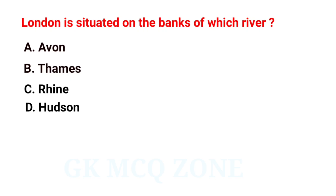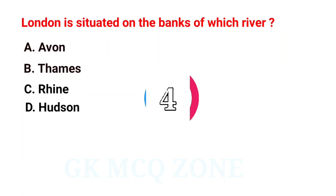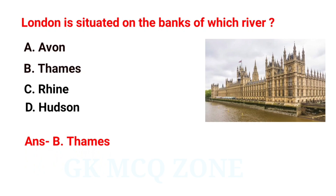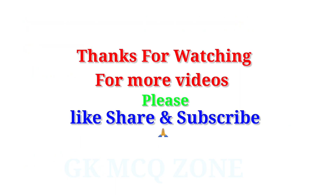London is situated on the banks of which river? The correct answer is option B: Thames.